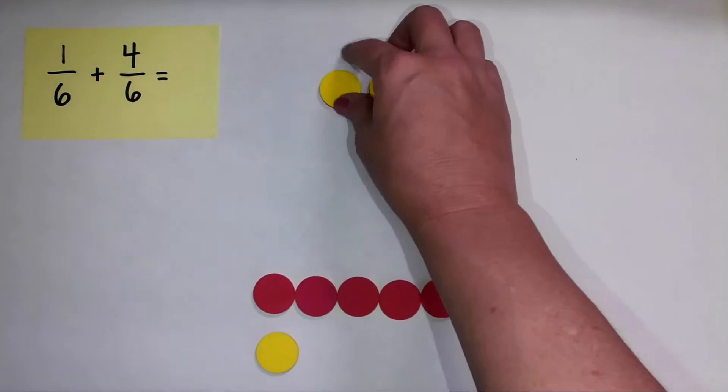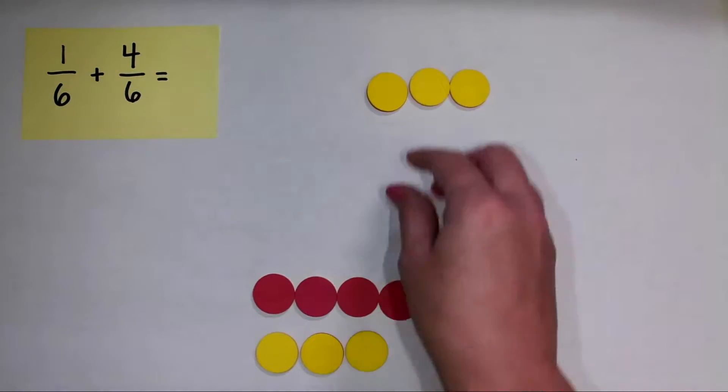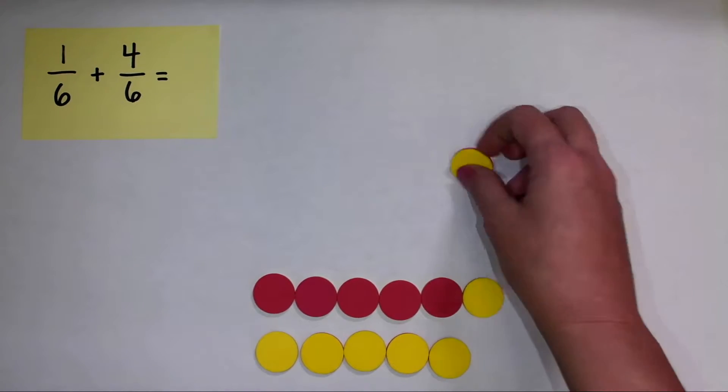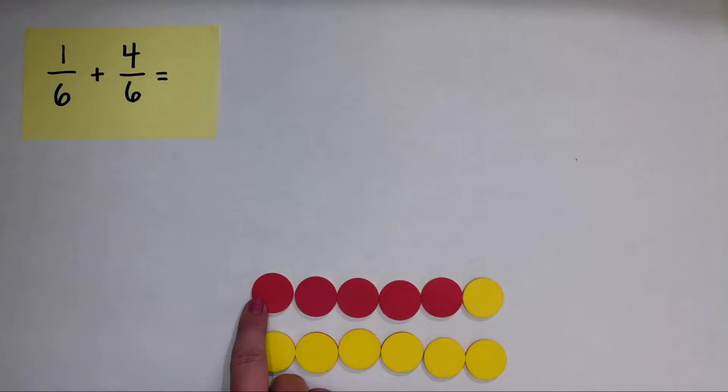Now, these other counters, they are all really showing a value of zero, and so I could line them up down here. But when I have one sixth, and I add four one sixth pieces, our sum is one, two, three, four, five, six.